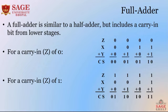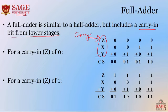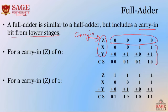Next is the full adder. A full adder is basically a half adder but it includes a carry-in bit from the lower stages, meaning it has three inputs: X, Y, and Z, where Z is the carry-in bit. When Z is 0, it works like a half adder: 0+0=0, 0+1=01, 1+0=01, and 1+1=10. So it is similar to the half adder previously discussed.